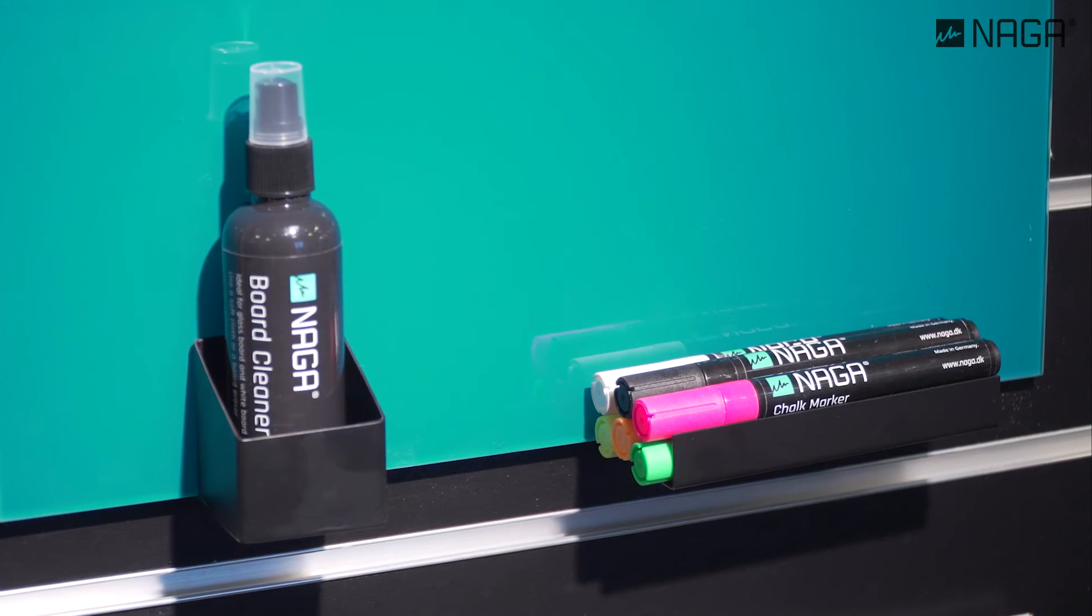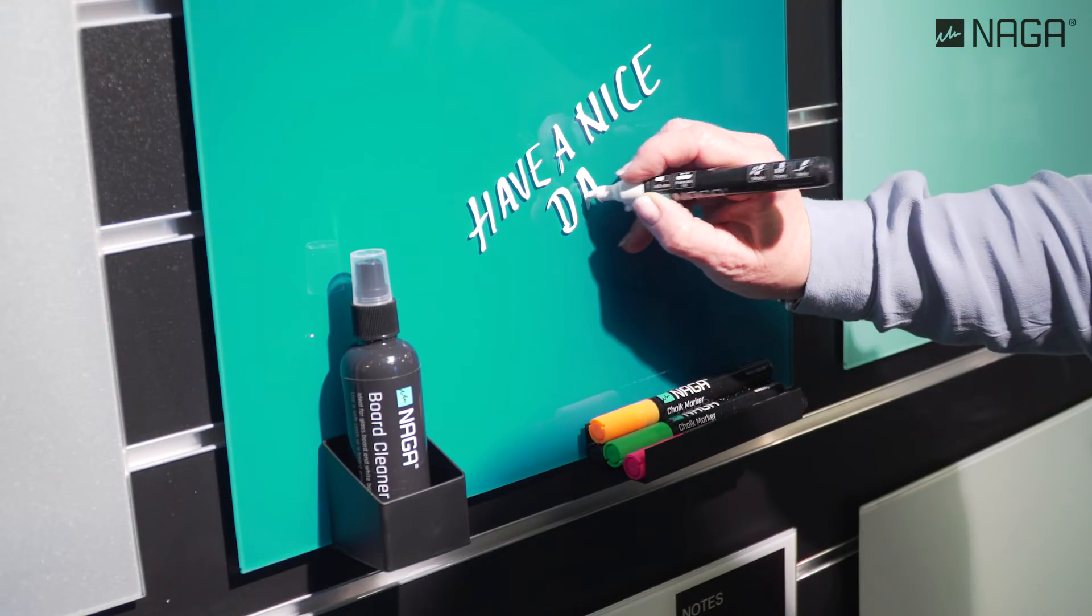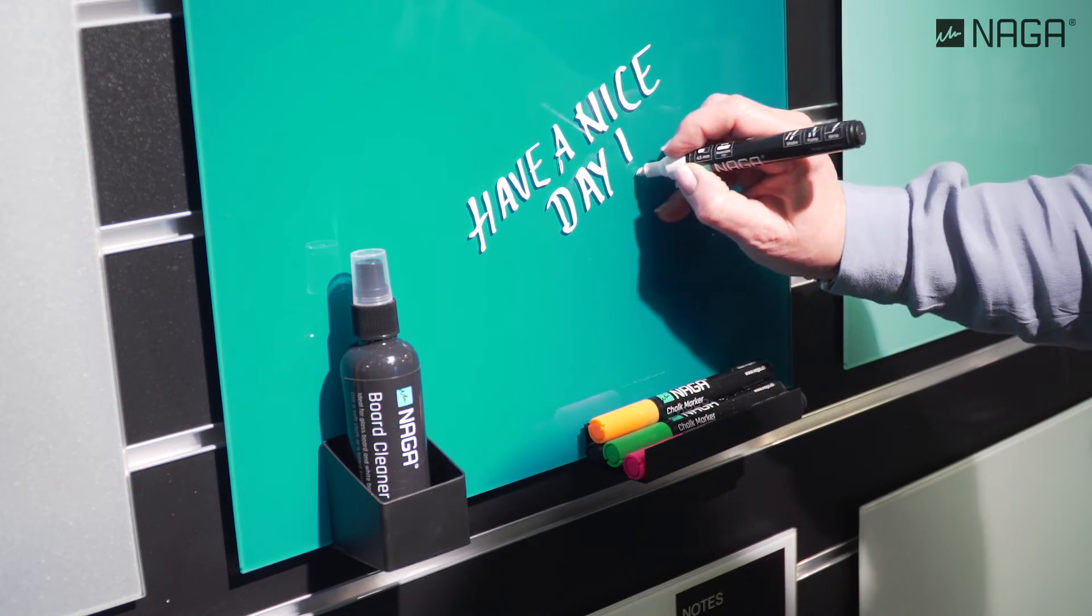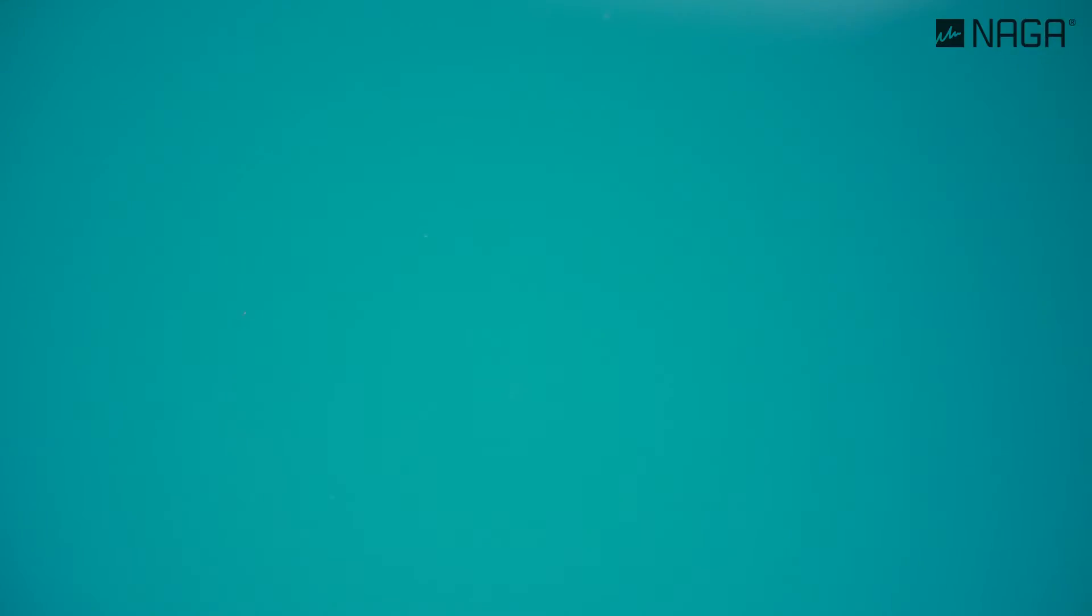Naga chalk marker is dry erase, based on liquid chalk. Easy to wipe off when it's dry. Use a board eraser or a paper towel.